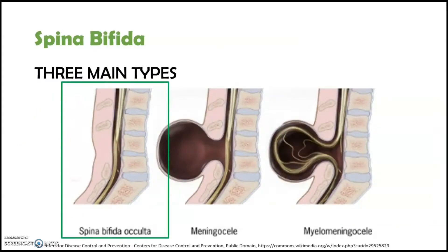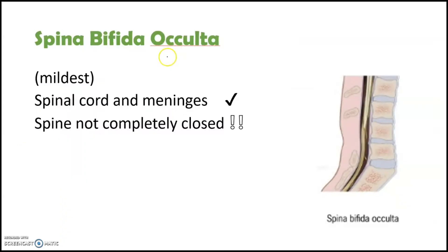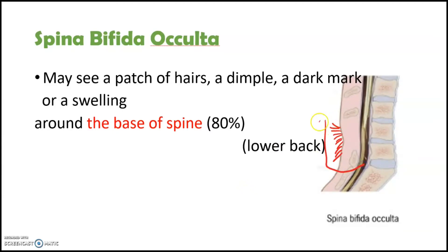Now we are going to talk about spina bifida occulta. Again, occulta means hidden in Latin. This is the mildest type of spina bifida. In spina bifida occulta, the spinal cord and meninges are normal. The nerves are not damaged, but the spine of the baby is not fully formed during the pregnancy. The skin around the lesion may be normal, or a patch of hairs, a dimple, a dark mark, or a swelling may be seen around the base of the spine in the lower back.